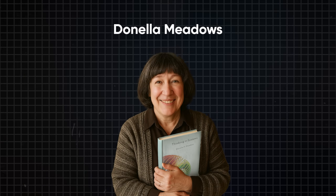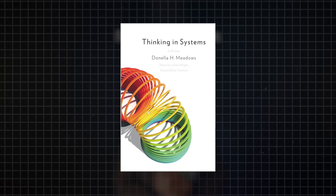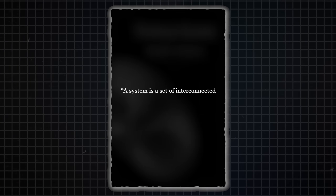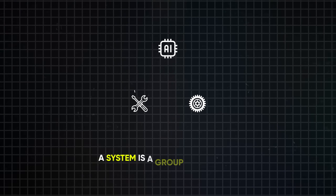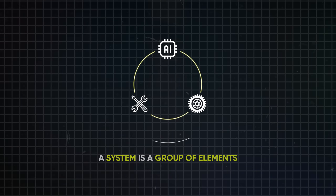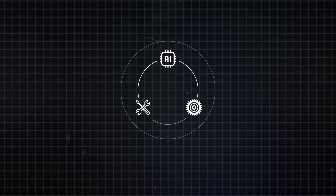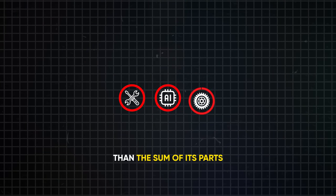To understand what an AI system really is, we first need to understand what a system is in general. As defined in one of my favorite books by Donella Meadows, Thinking in Systems, a system is a set of interconnected things that together produce their own behavior over time. Essentially, a system is a group of elements where the whole is bigger than the sum of its parts. This is a very key thing to remember because we will return to this later.